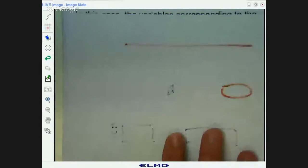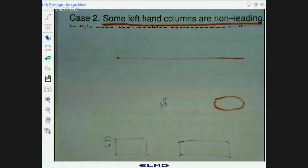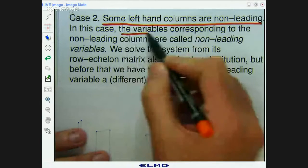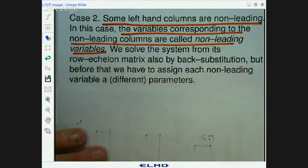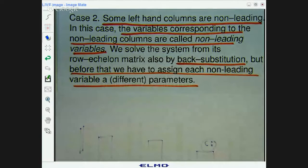It's not always as simple as that though. Sometimes not all the columns on the left hand side are leading. So what do you do in that case? Well, that'll be a case where you have an infinite number of solutions. Okay, so what happens in this case is that the variables corresponding to the non-leading columns are called non-leading variables. And what we do is we still use back substitution, but we also assign some variables or parameters.